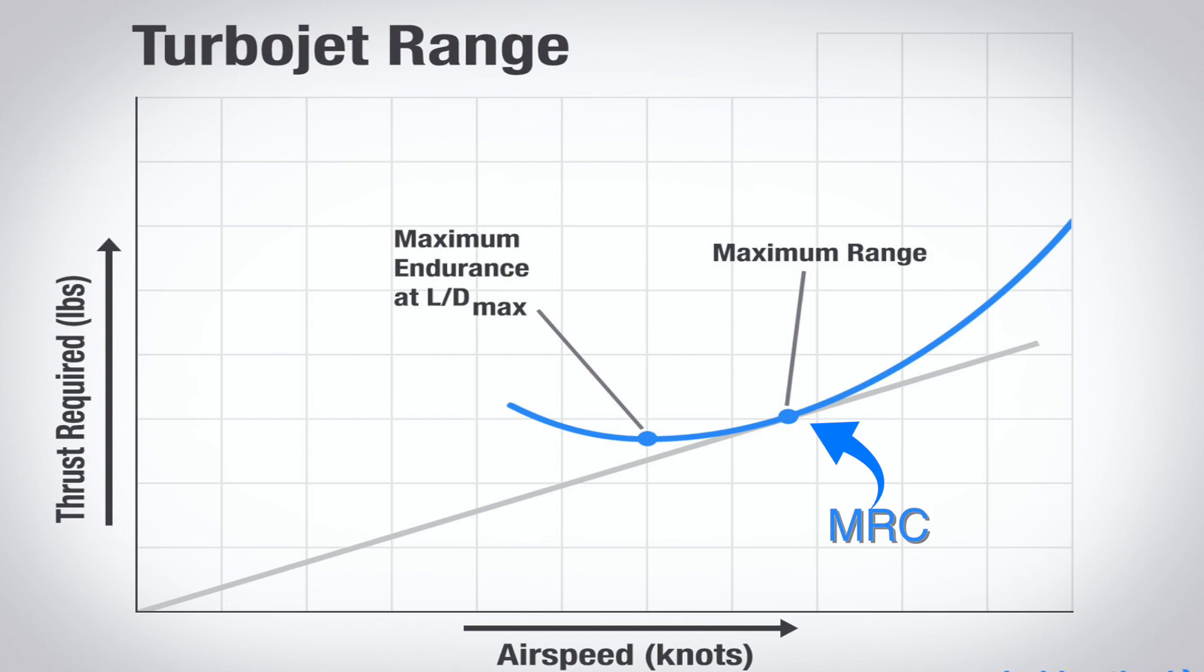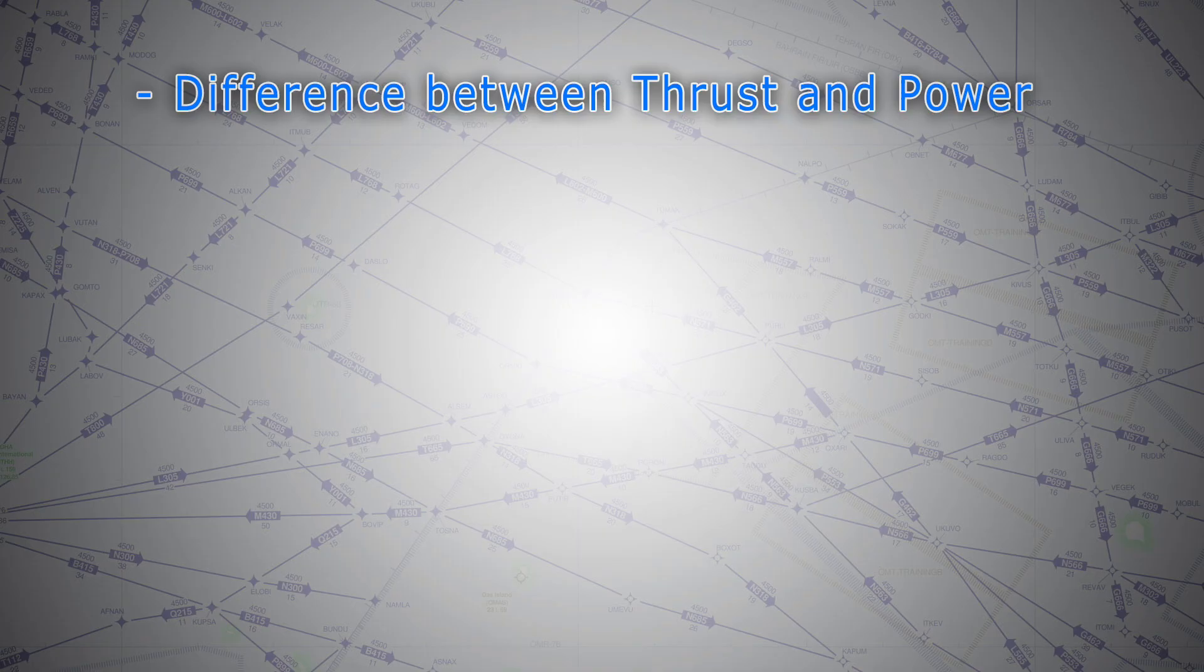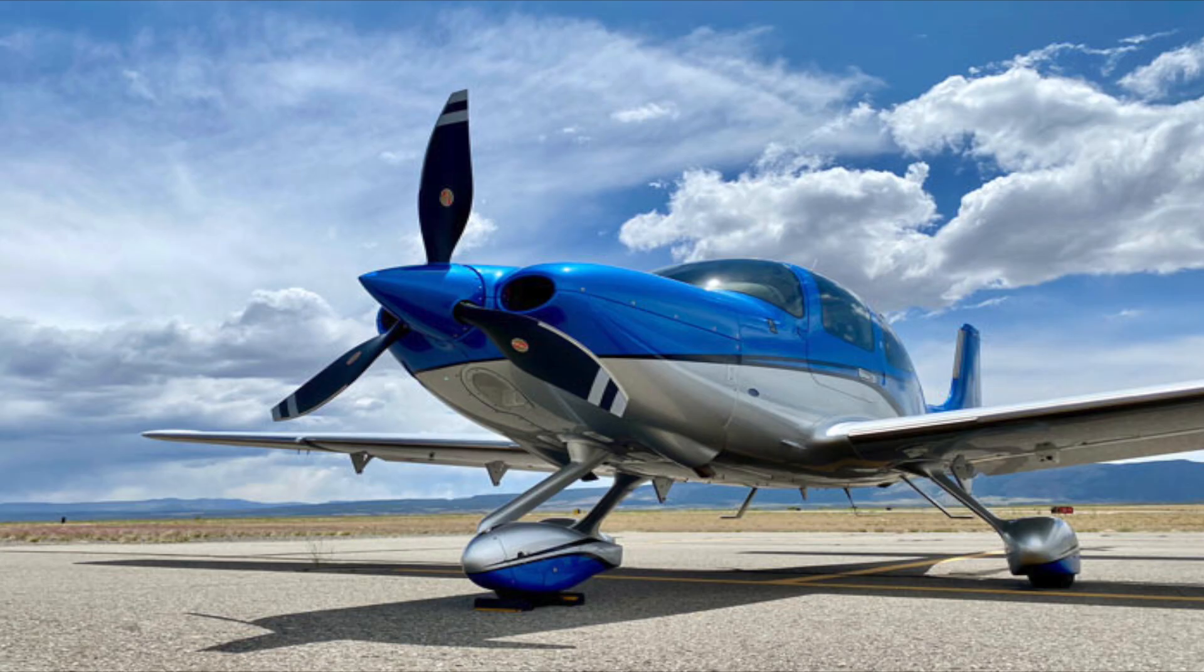In fact, with a thrust producing engine, this best range tangent point occurs where the induced drag makes up about 25% of total drag and parasite drag makes about 75%.